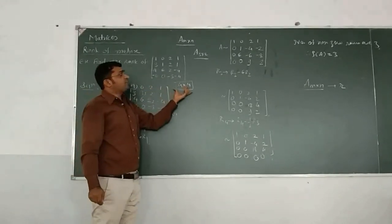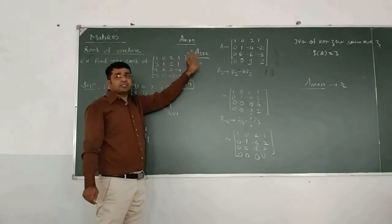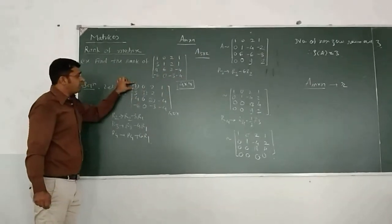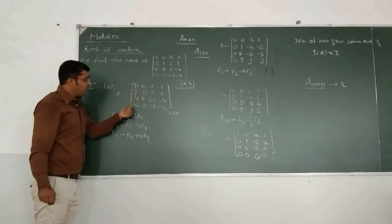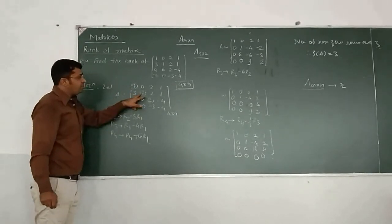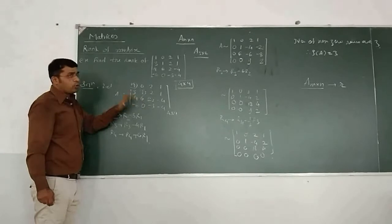We have a square matrix. Again, we follow the same way. That is, use this first element and make the below entries as 0. If we use this element, we will make the lower entries 0. Likewise, we have to go.